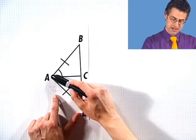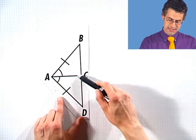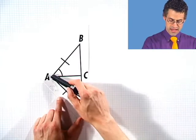And this side is congruent to this side. The question is: can we show that triangle ACB is congruent to triangle ACD?